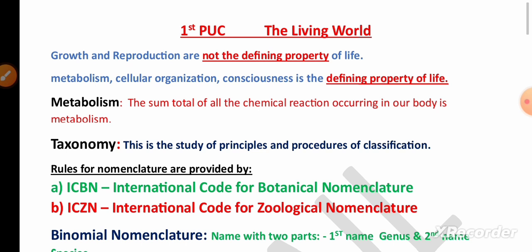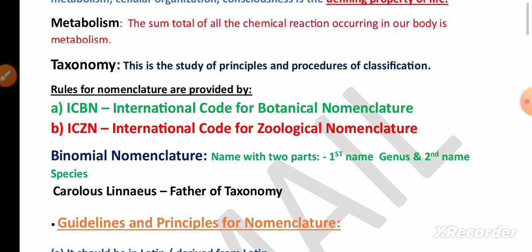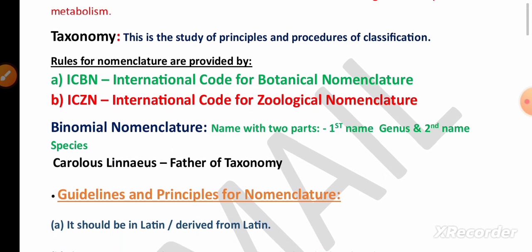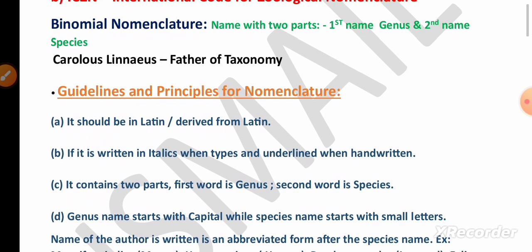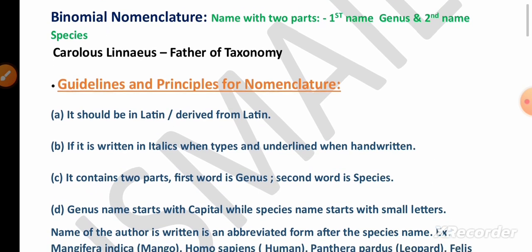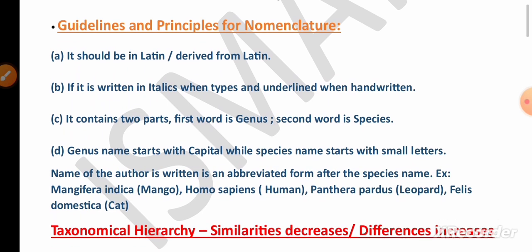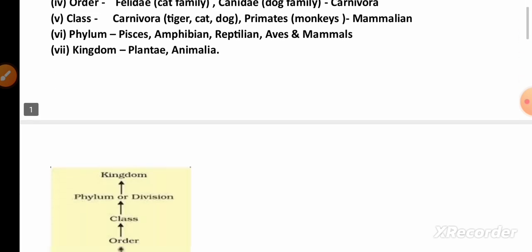From the first chapter, The Living World, remember the defining and non-defining properties of life, the definition of metabolism and taxonomy, and the full form of ICBN and ICZN. For five marks, remember binomial nomenclature — who proposed it and the guidelines to write the nomenclature.